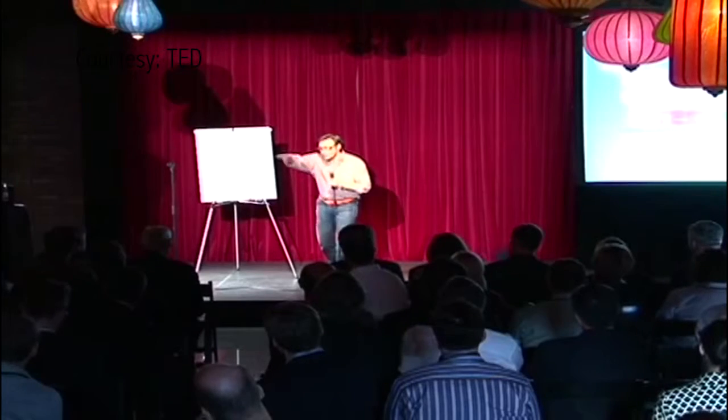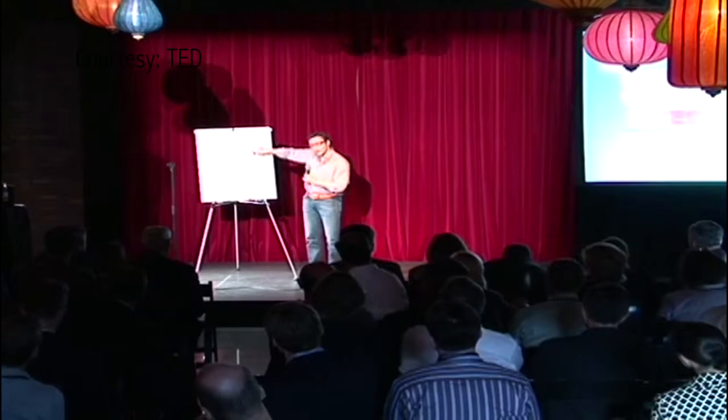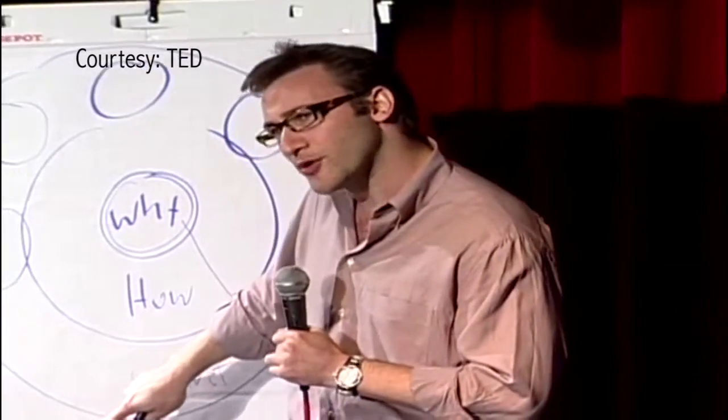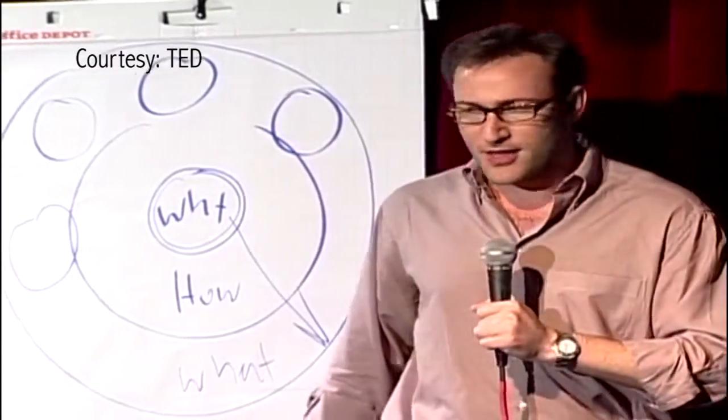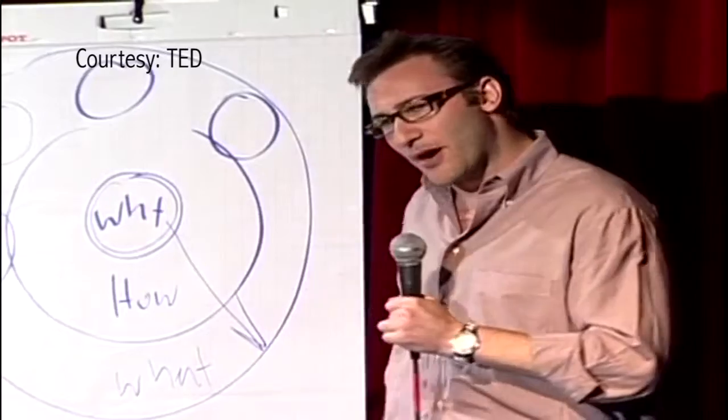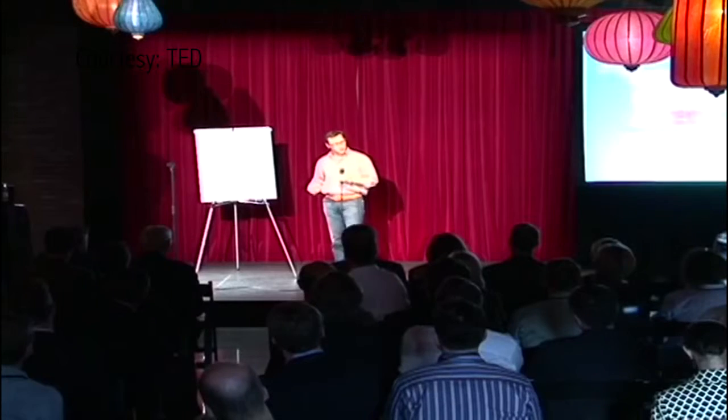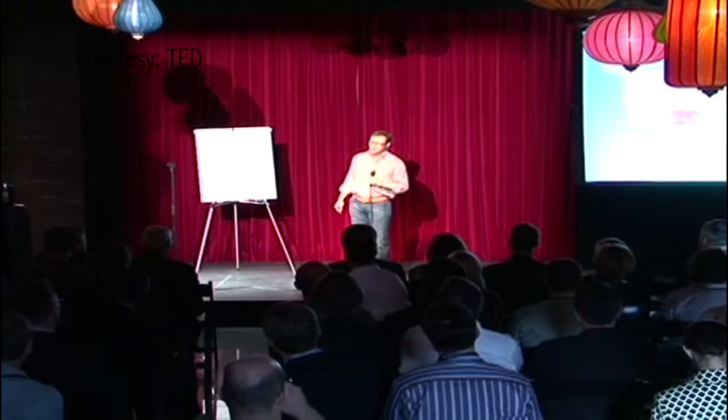If you look at a cross-section of the human brain, looking from the top down, what you see is the human brain is actually broken into three major components that correlate perfectly with the golden circle. Our newest brain, our homo sapien brain, our neocortex, corresponds with the what level. The neocortex is responsible for all of our rational and analytical thought and language. The middle two sections make up our limbic brains, and our limbic brains are responsible for all of our feelings, like trust and loyalty. It's also responsible for all human behavior, all decision-making, and it has no capacity for language.